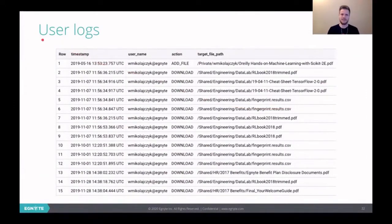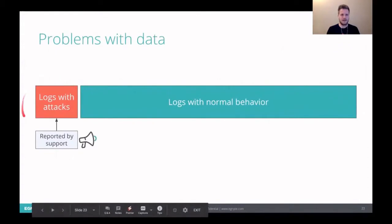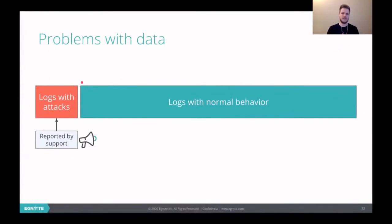The data we have are user logs. We can see a timestamp, we can see a username, we can see a type of action performed and a target file path. There are more action types than adding a file or downloading. It can be moving file, deleting file and other things. But there is one problem with our data. It's very limited when it comes to attacks data. Because as you remember, we have a lot of users, a lot of files, they do a lot of actions. But most of them is just normal behavior. So we have a very limited amount of attacks data. And we get it only because our support can provide to us some time ranges when some attacks have place for our customers.